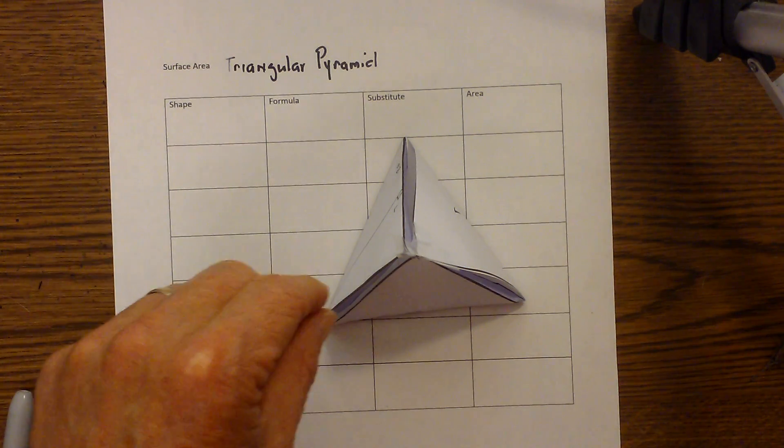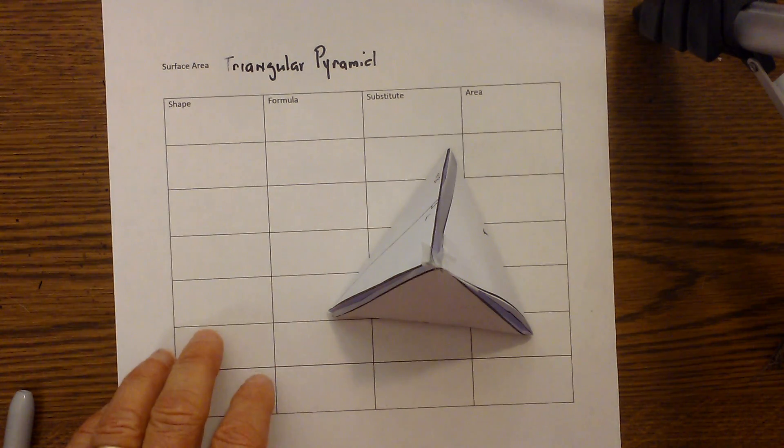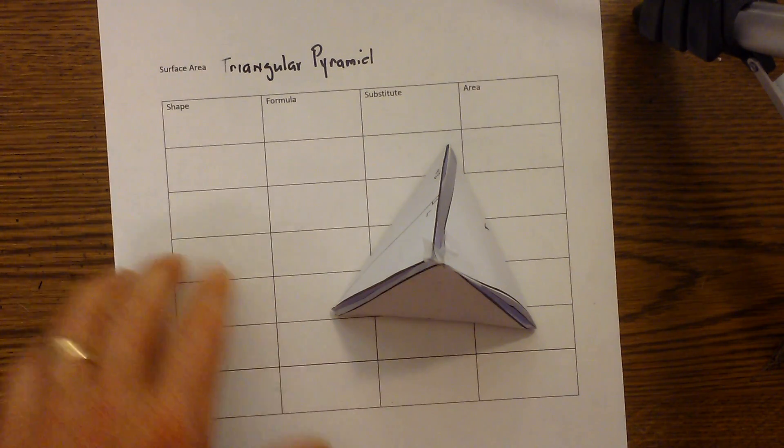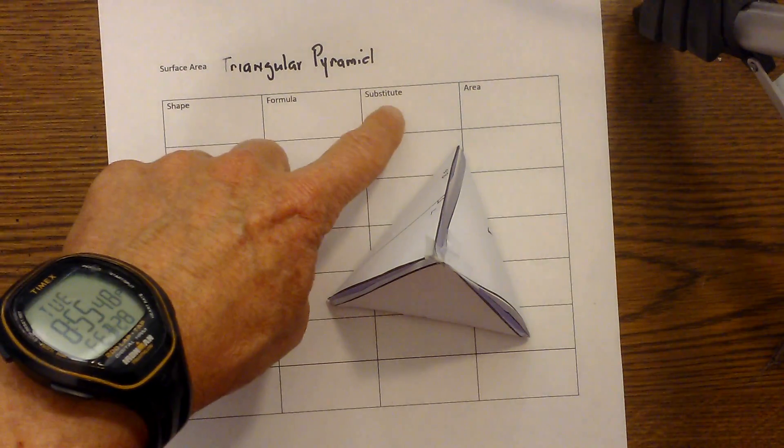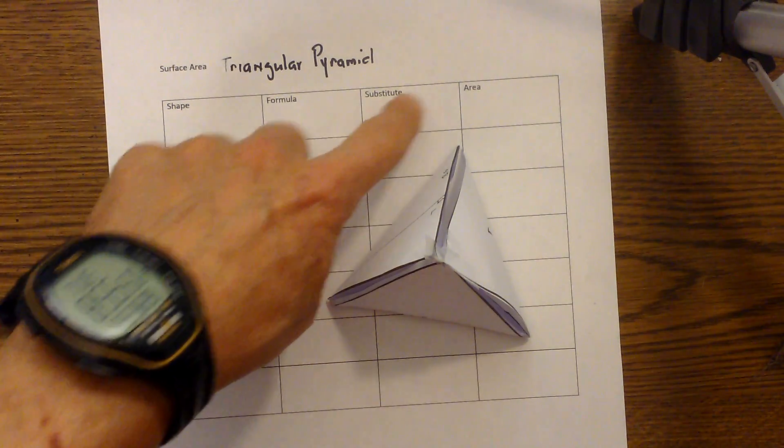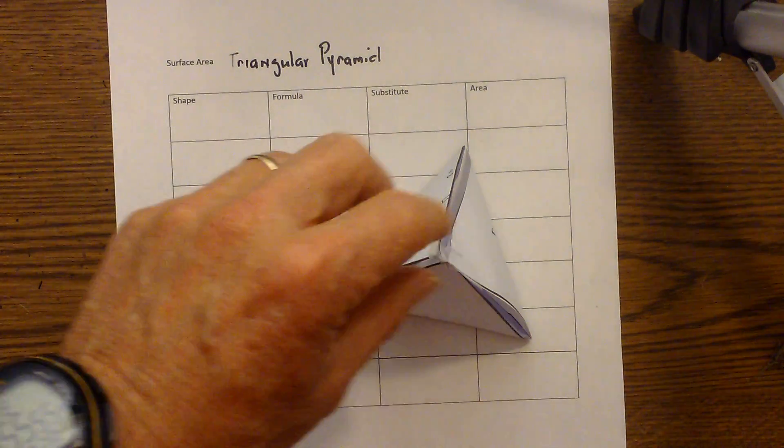Now I have two things that can help you visualize and organize the data for the surface area. One, I have a grid with shape, formula, substitute, and area that helps organize all of the numbers.